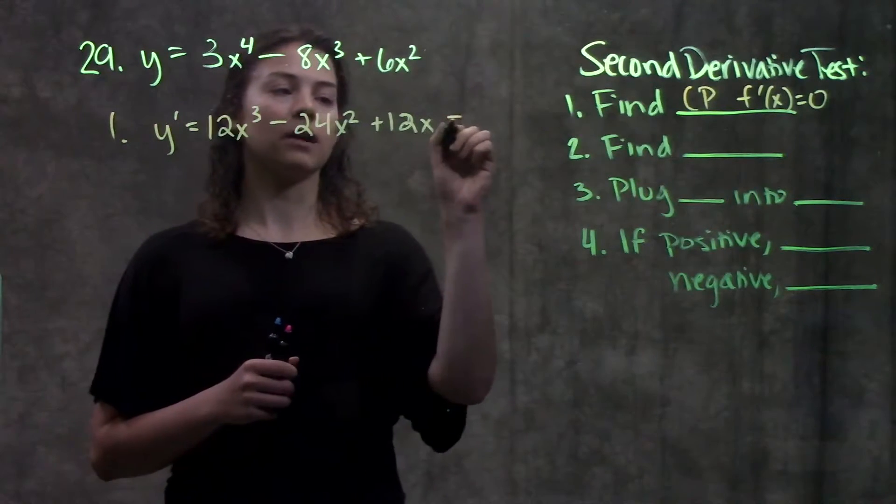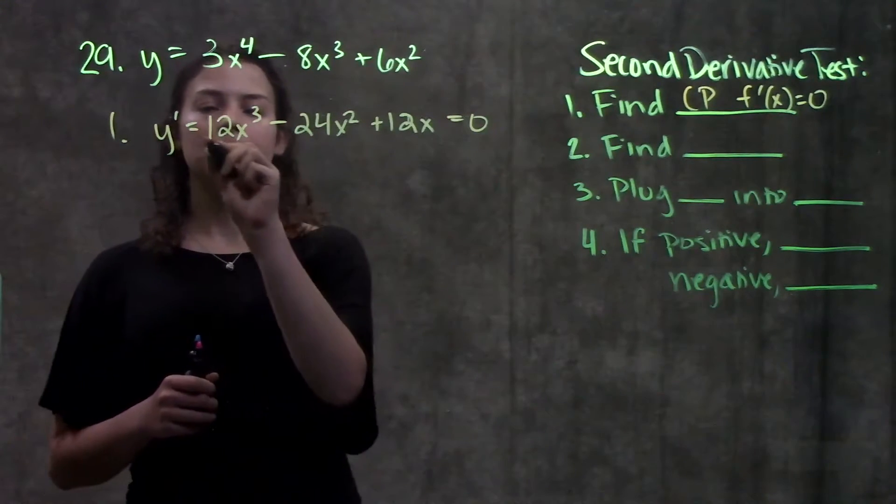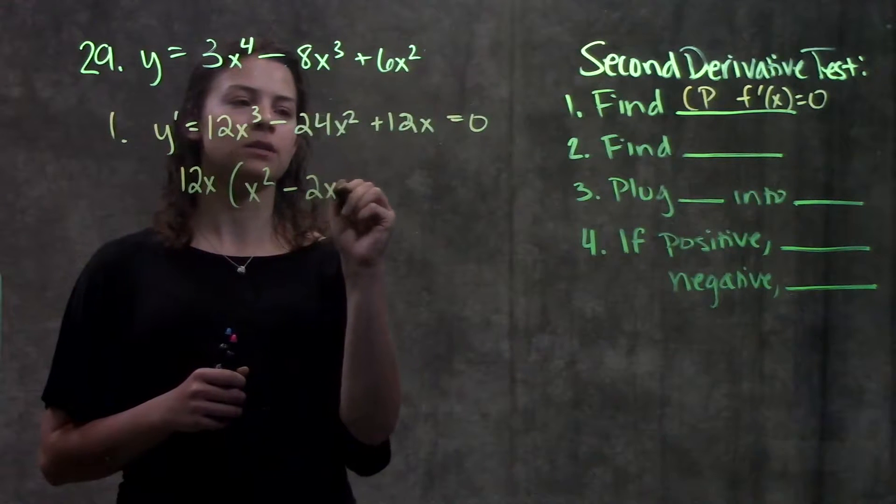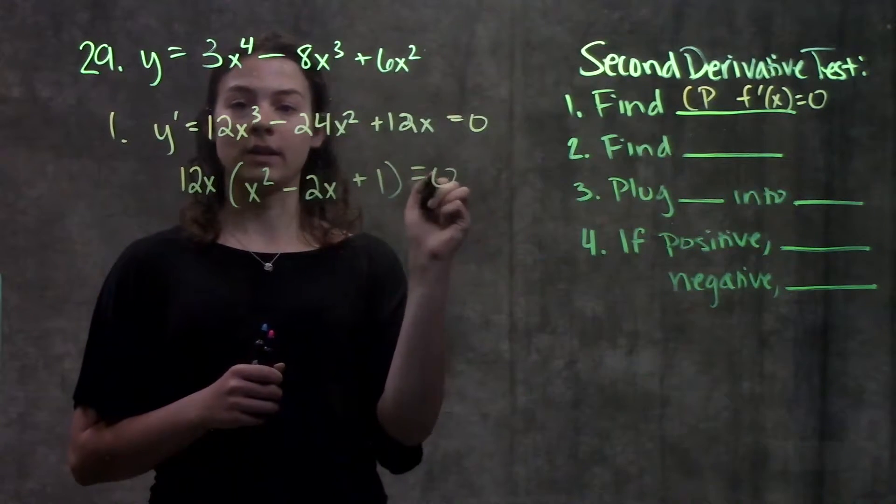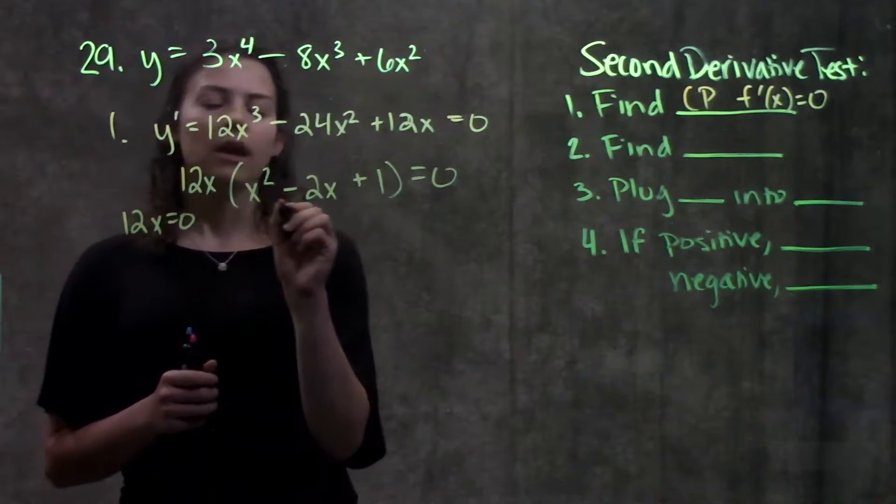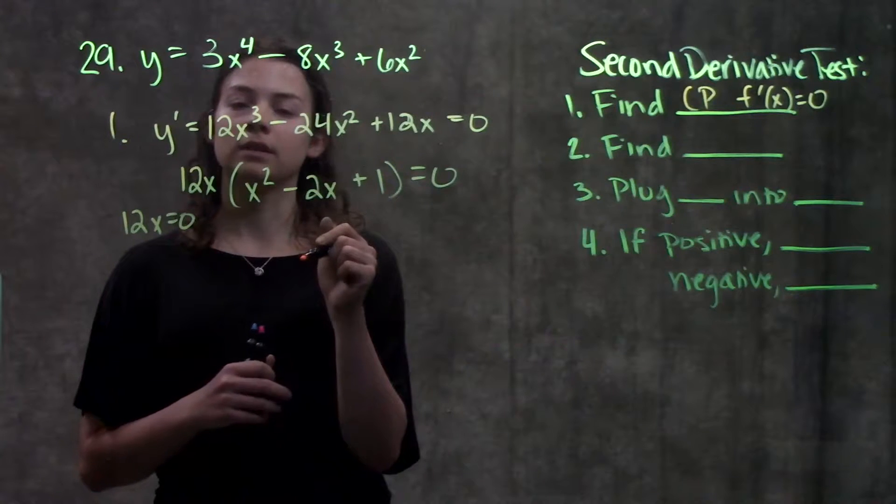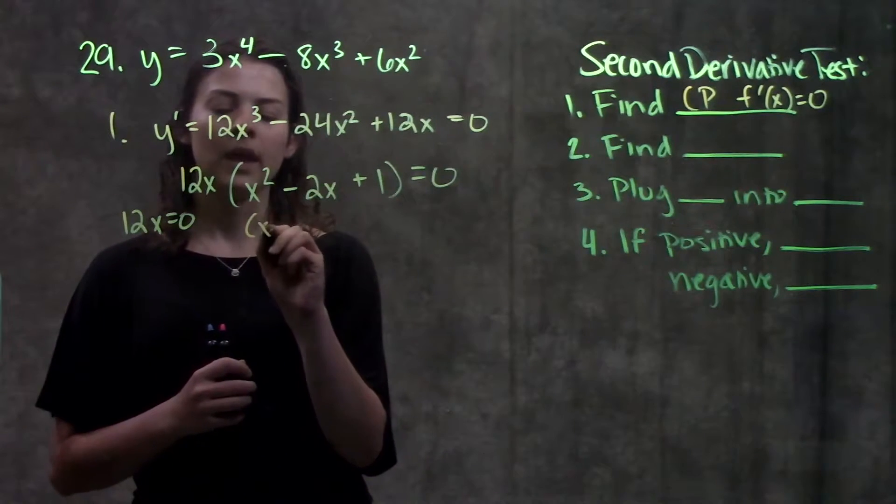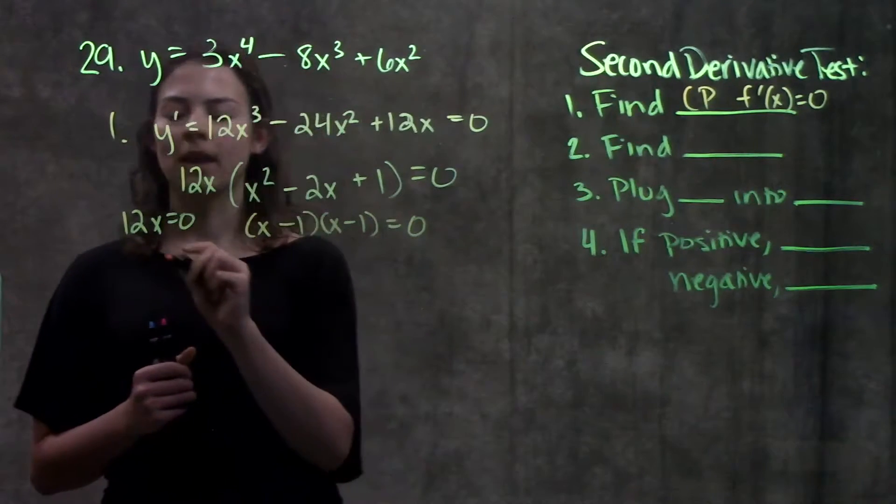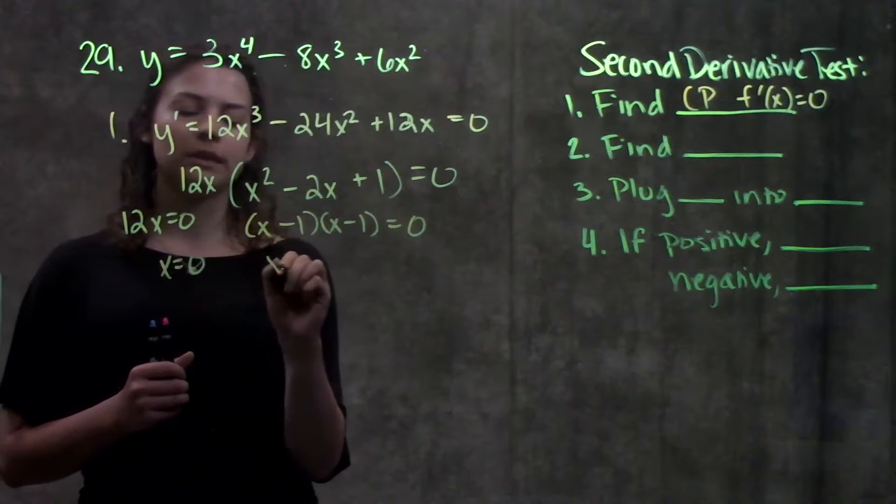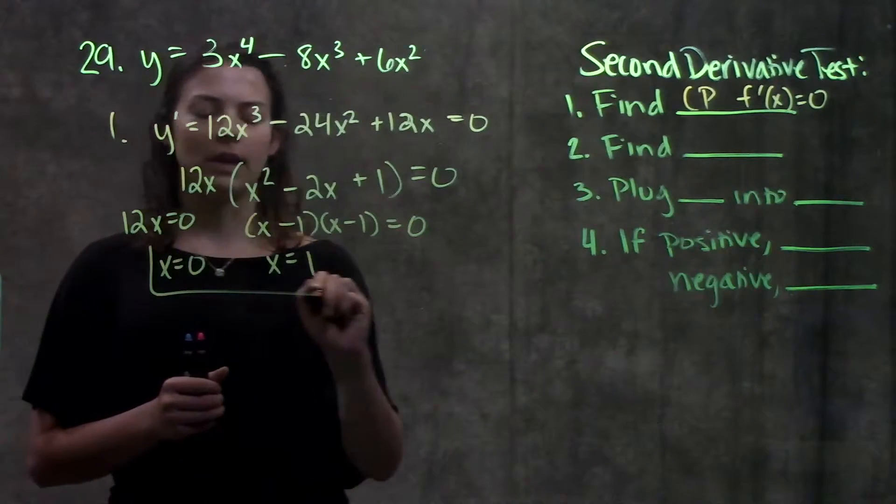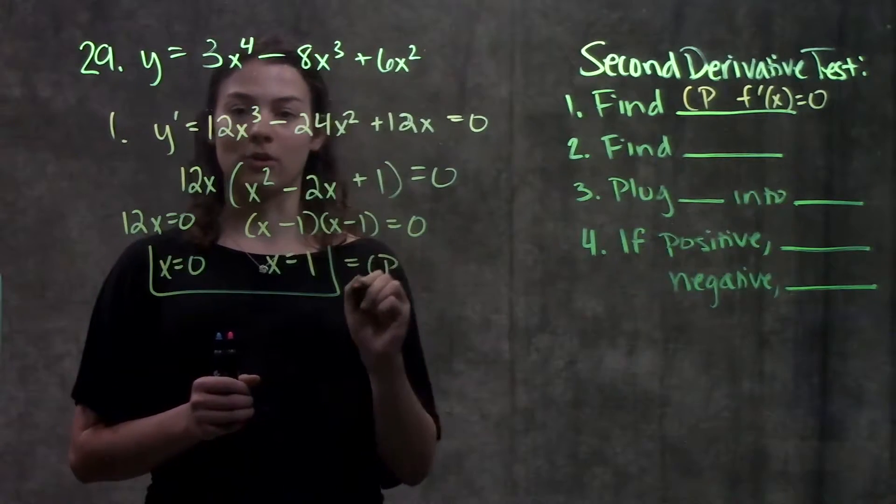And now I need to set this equal to zero and solve for my x's. To do that, I'm going to factor out my greatest common factor, which is 12x, and that leaves me with x squared minus 2x plus 1, all equal to zero. Now I set both of these terms equal to zero and solve for my x's. What I have here, though, is a quadratic. So remember, to solve for a quadratic, we just factor down into two binomials. When you factor this out, it ends up being x minus 1 times x minus 1 equals zero. And solving for my x's, I get that x equals zero over here, and x equals positive 1 for both of these terms. So that means that zero and one, these are my critical points.